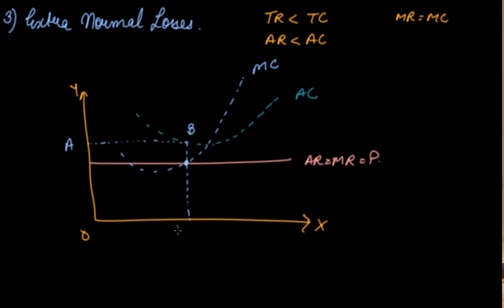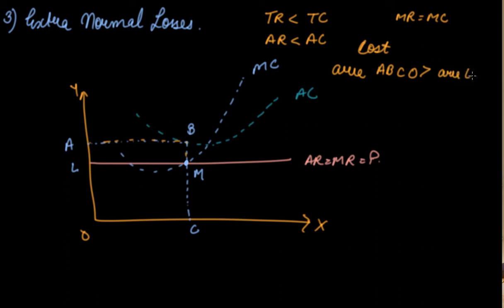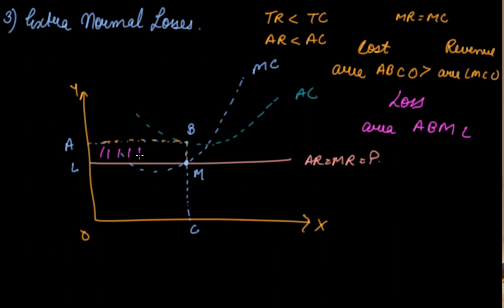In this case, cost area ABCO is greater than revenue area LMCO. When the cost area is greater than the revenue area, you suffer a loss. The rectangle ABML, where average costs exceed average revenues, represents your extra normal losses.